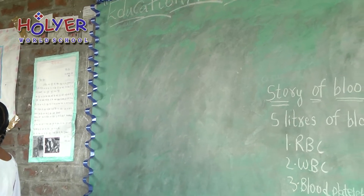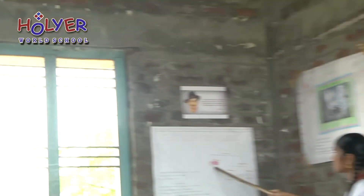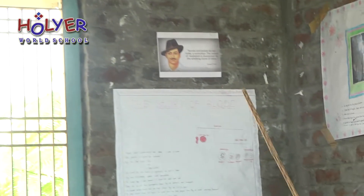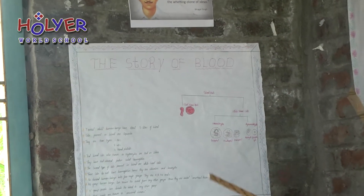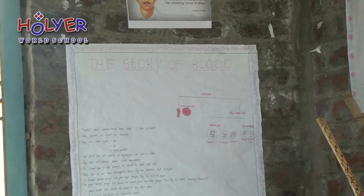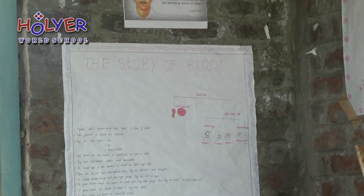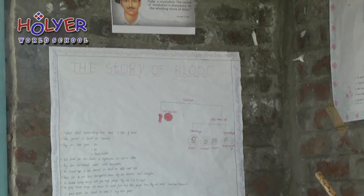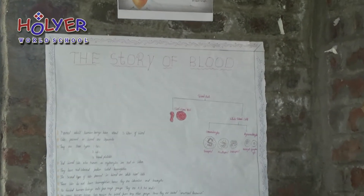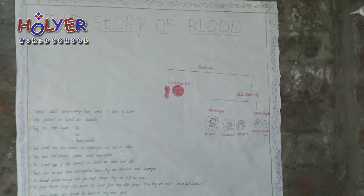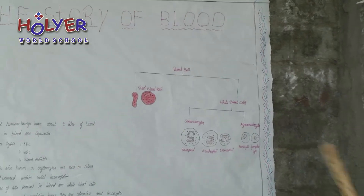These are called red blood cells. They are also known as erythrocytes and are red in colour. They have a red coloured protein called hemoglobin.